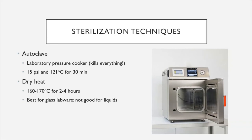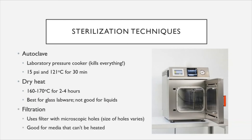An alternative to the autoclave is dry heat, which requires heating a sample to 160 to 170 degrees Celsius for two to four hours. This type of sterilization is best for lab glassware and not good for liquids, since liquids boil around 100 degrees Celsius. Filtration is another sterilization technique, typically used for growth media that cannot be heated. For example, certain media contain enriching ingredients like red blood cells, which would be destroyed by heat. Using filters with tiny microscopic pores, you can filter out any bacteria, protozoa, or viral contaminants.